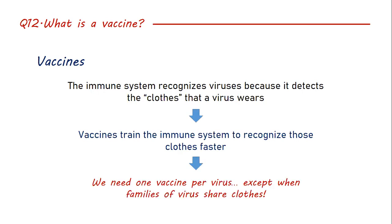The challenge is that every virus tends to use different clothes, which means we need one vaccine per virus. Unlike antiviral drugs — where many work against multiple viruses — there is almost no vaccine that works for more than one virus, because viruses don't really share clothes, except in very, very closely related viruses. That is when we can say a vaccine has cross-reactivity and can prepare the immune system for more than one virus.